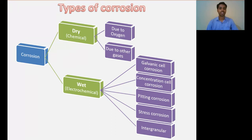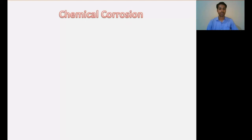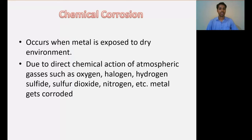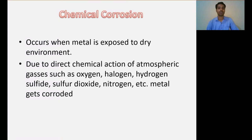Let's start with the first: chemical corrosion. This type of corrosion occurs when metal is exposed to the dry environment due to the direct chemical action of atmospheric gases such as oxygen, halogens, hydrogen sulfide, or sulfur dioxide, and many more. Metal gets corroded.